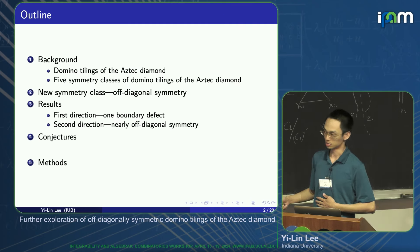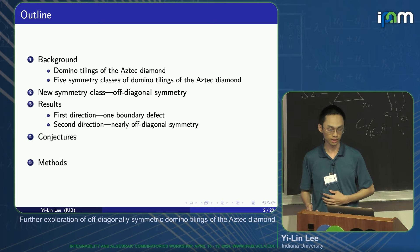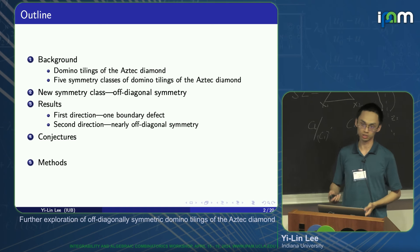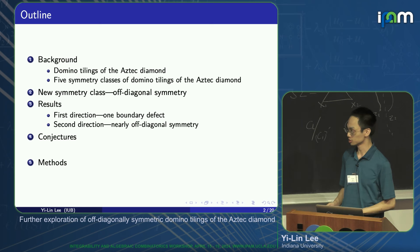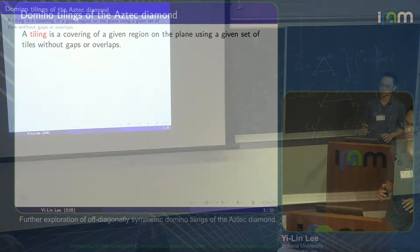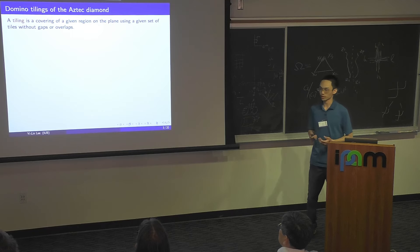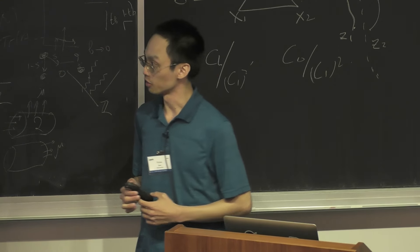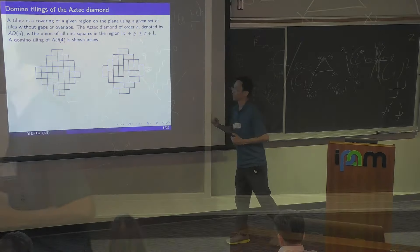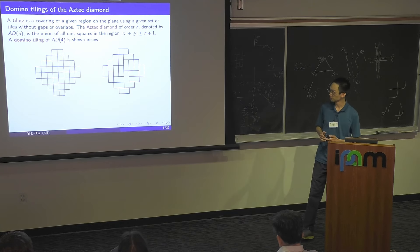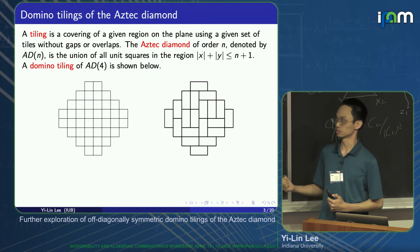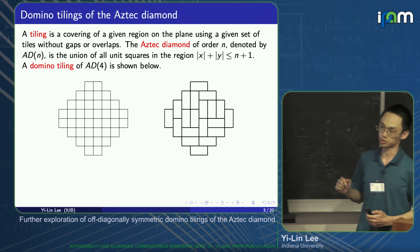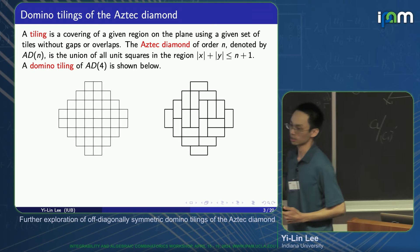First, I would like to introduce domino tilings of Aztec diamond and the symmetry classes. A tiling is the covering of a region on a plane given a set of tiles without gaps or overlaps. In this talk, I would like to look at the region called the Aztec diamond. It's the union of all unit squares in the region bounded by this inequality. On the left picture, it's the Aztec diamond of order four. On the right picture, it is an example of domino tilings. Basically, we cover this Aztec diamond region using dominoes, which are 1 by 2 or 2 by 1 rectangles, and we cover it without gaps or overlaps.